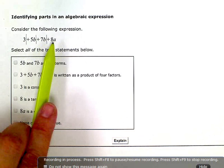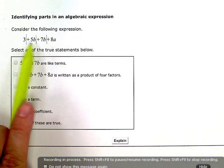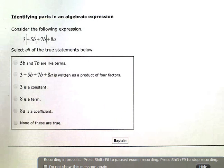This one has an a, so it's not a like term with these. And that one doesn't have a variable at all. But these two are like terms. So that one is true. We would select that.